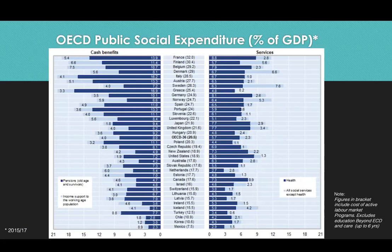Often built into the safety net scheme is the principle of graduation — beneficiaries receive support and are encouraged to graduate out of being recipients of social assistance benefits or services. The paradox in the model of social protection offered to African countries and other Global South countries is that both the efforts to limit fiscal outlay for social assistance and the idea of graduation are at variance with the experience and practice in most OECD countries.